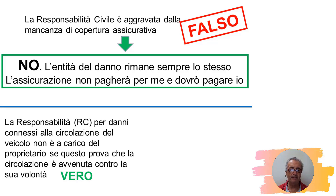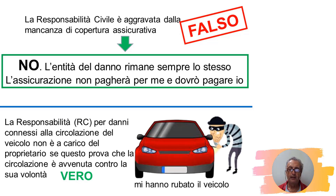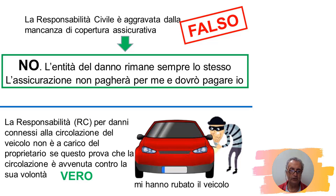La responsabilità per danni connessi all'assicurazione dei veicoli non è a carico del proprietario se la circolazione è avvenuta contro la sua volontà. Esempio classico: mi hanno rubato la macchina. Se questa persona che mi ha rubato il veicolo ha fatto un danno, io, anche se sono proprietario del veicolo, non sono responsabile perché la circolazione è avvenuta contro la volontà del proprietario.